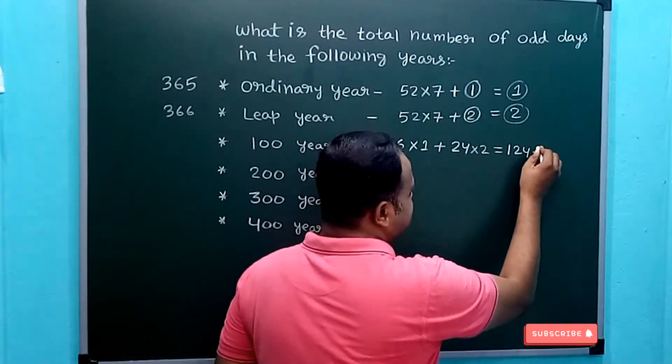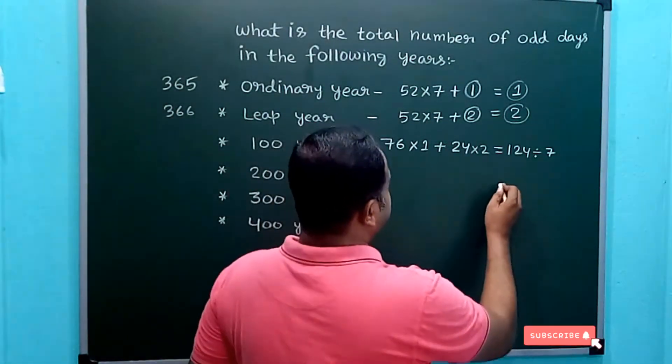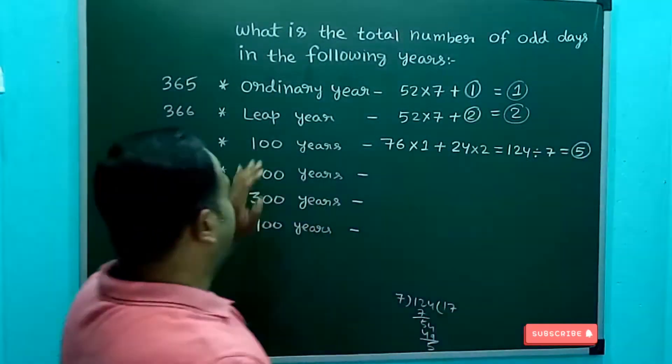Now 124, if you divide by 7, we are getting remainder as 5. It means there are five odd days in 100 years.